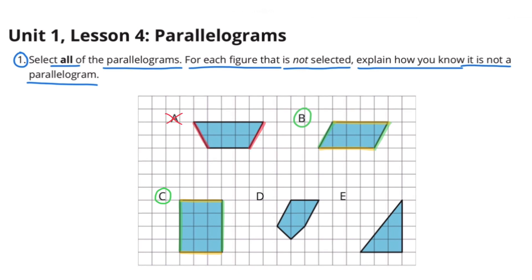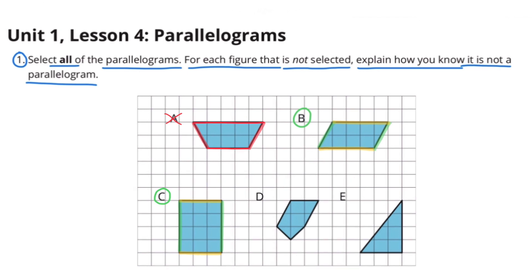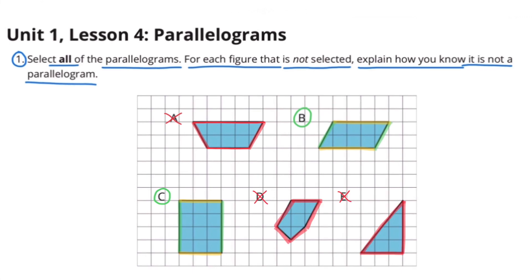Figure A is not a parallelogram — it's a trapezoid. One set of opposite sides are not parallel and the other set of opposite sides are not the same length. Figure D is a pentagon and Figure E is a right triangle.